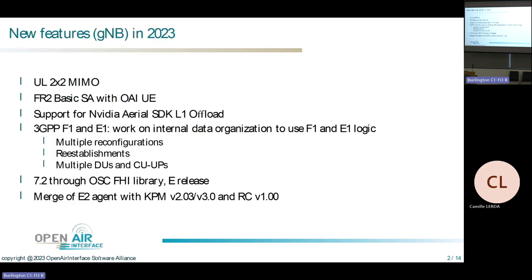We tried to summarize on one slide the key new features introduced in Open Air Interface in 2023. This is really just the tip of the iceberg — a lot of work has gone into stabilizing the code, re-architecting, and improving KPIs. In terms of new features, these are basically the highlights. We now have uplink two-layer MIMO, which works with commercial UEs and also with the OAI UE.